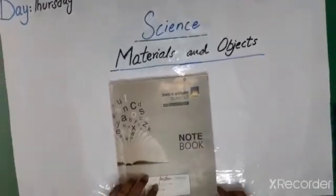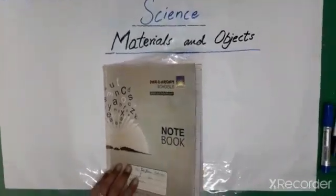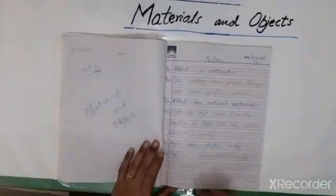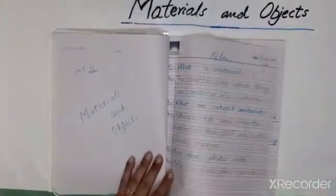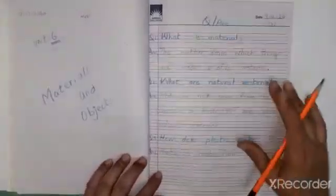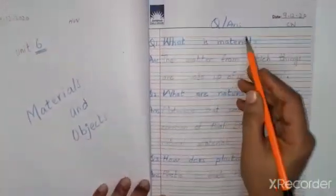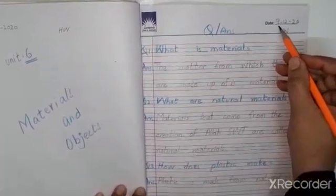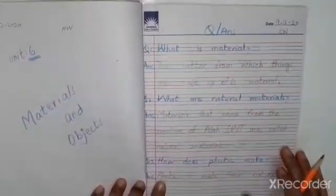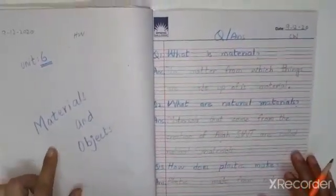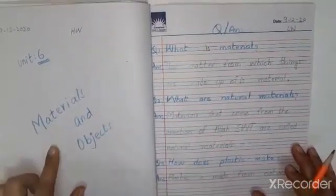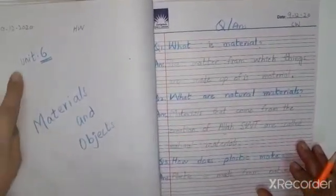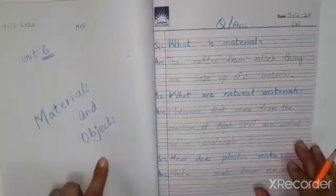Okay students, this is our last work — the previous work which we have done in our last class. I hope you have completed the question answers. Yesterday's work — I hope you have made a colourful and beautiful title page of Unit 6: Materials and Objects.